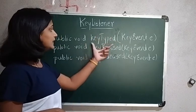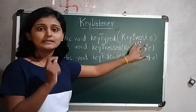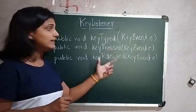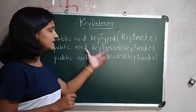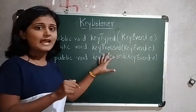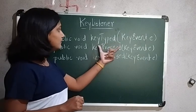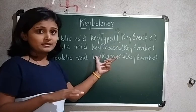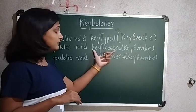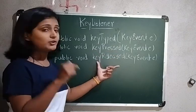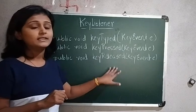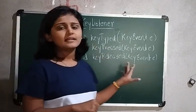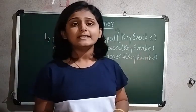The KeyListener has three methods: keyTyped, where you pass the parameter KeyEvent e, then keyPressed and keyReleased. As per the functionality: whenever you type a character, keyTyped is invoked; whenever a key is pressed, keyPressed is invoked; and whenever you release the key, keyReleased is invoked. This was the overview of KeyListener.